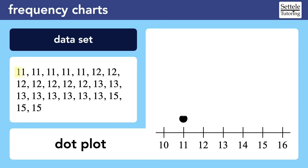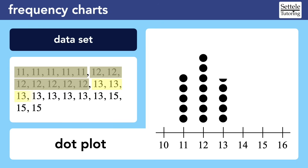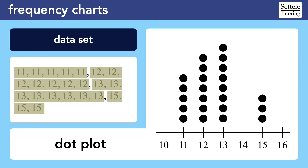For a dot plot, we never want to skip a value like 14 because number lines need to include all values over our range. We add 5 dots at 11 to represent the 5 times that 11 appears in our dataset. The number 12 has a frequency of 7, so we'll have 7 dots above 12. As we draw the 8 dots for the value 13, we can see why dot plots are cumbersome — anything more than 5 dots is hard to count quickly. We finish with 3 dots for the 3 fifteens.